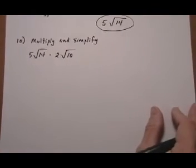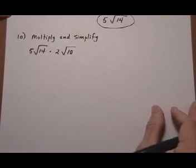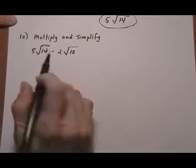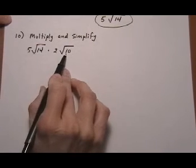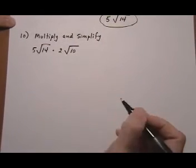And here we have another similar one. Multiply and simplify. 14 is 2 times 7, so nothing nice there. 10 is 2 times 5. Nothing nice there, so I'm going to go ahead and put them under one radical.